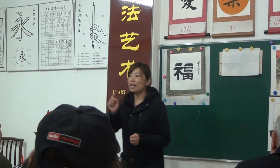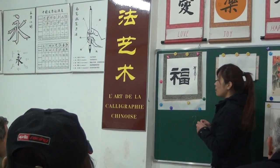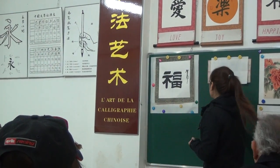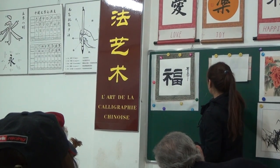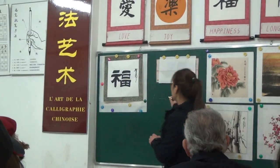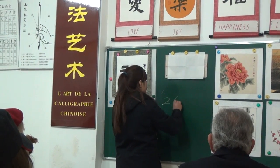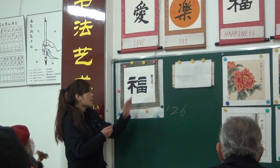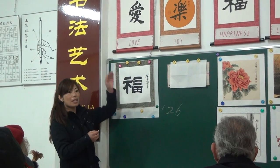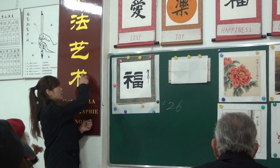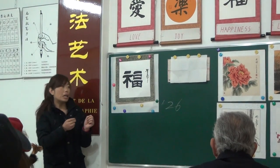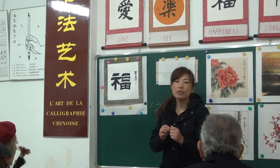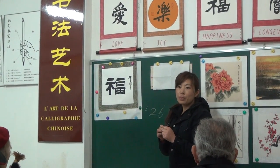Before you write, let me give you some information about Chinese characters. You use 26 letters in Western writing. Chinese characters have a structure — some are left-right, some are up and down, and some are just one single part. One part or one side of a Chinese character we call a radical.